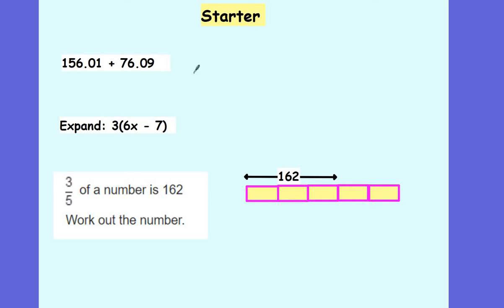Good morning Year 7 and welcome to today's math lesson. Let's start off with a quick starter. Can you please work out 156.01 plus 76.09? Can you then expand the bracket 3 lots of 6x take away 7? And answer my question: if 3 fifths of a number is 162, work out that number. I've drawn you a little diagram that you might be able to use to help you. Please pause the video for a minute or two and in your light blue books answer these questions now.